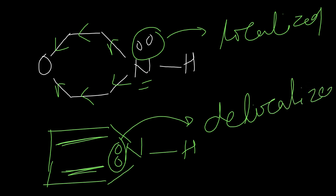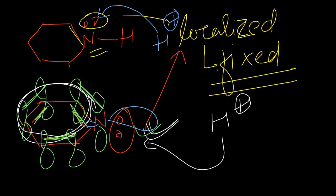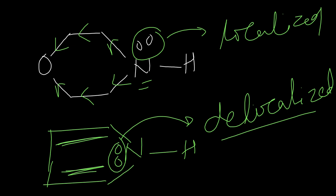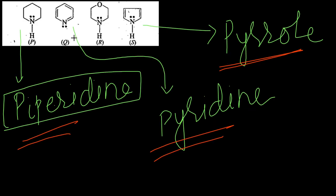One thing you need to understand: localized electrons are very easy to donate to an atom, but delocalized electrons are very difficult to donate. So first structure is piperidine, second is pyridine, third is the one in which one carbon is replaced by oxygen, and fourth is pyrrole. It is clear that S has least basicity because its electrons are not free.